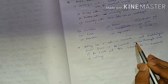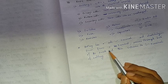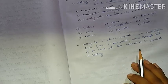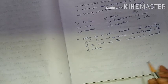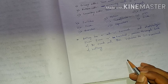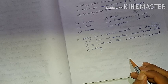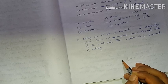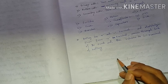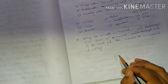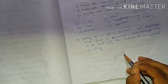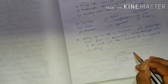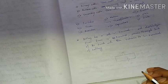The battery has positive and negative terminals. Electricity flows from the positive terminal, passes through the circuit components, and then returns to the negative terminal.